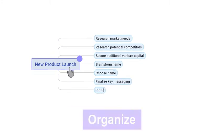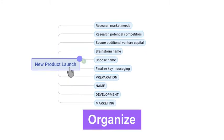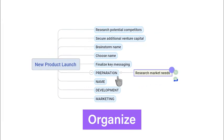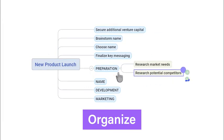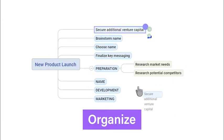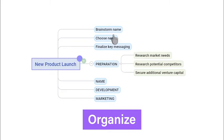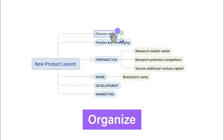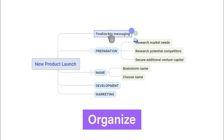Next, make a second pass for organizing. This is when you move each task into its proper phase. If you need to change something, the map can change just about as fast as you can think.